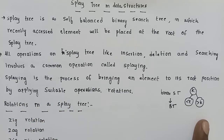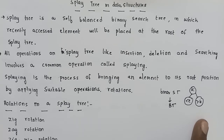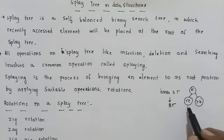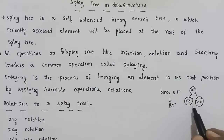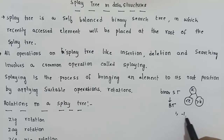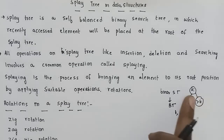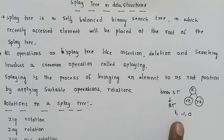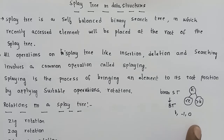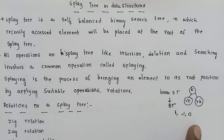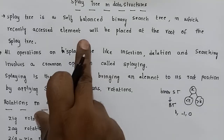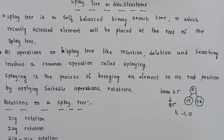In a self-balanced binary search tree, the height difference between the left and right subtrees must be less than 1 — that means either 1, minus 1, or 0. The Splay Tree is a self-balanced binary search tree, so it applies extra operations to maintain balance automatically.